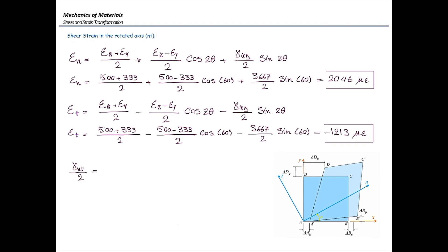And for shear, we have gamma NT over 2 equal to negative epsilon X minus epsilon Y over 2 sine of 2 theta plus gamma XY over 2 cosine of 2 theta. And again, we would plug in the numbers. And gamma NT would be equal to 1689 microradians.